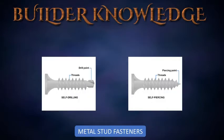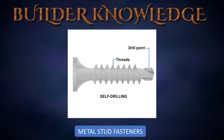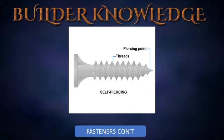Metal stud system fasteners are typically self-tapping screws. They fasten framing members to each other and other materials to framing members, cutting their own threads as they are driven into metal. There are two types: self-drilling screws and self-piercing screws. Self-drilling screws are the most frequently used steel-to-steel fastener — the screw point drills through the steel layers before threads engage, and the screw should be three-eighths to half an inch longer than the materials being fastened. Self-piercing screws have a sharp point capable of penetrating thin metal, with diameters identified by gauge numbers from number six to number fourteen.